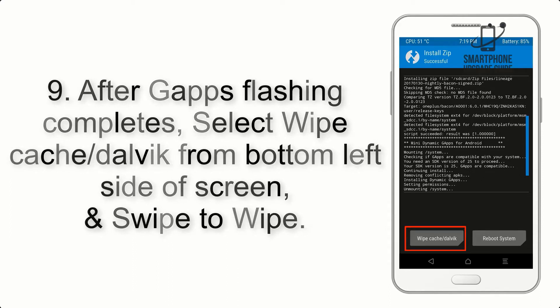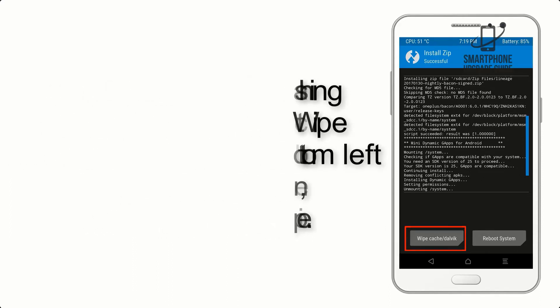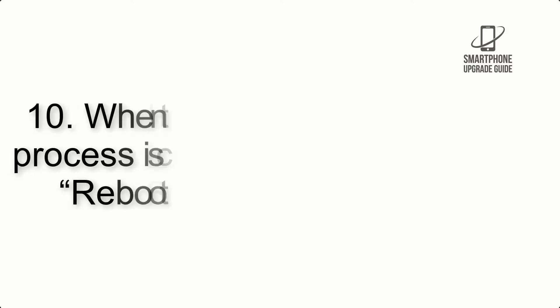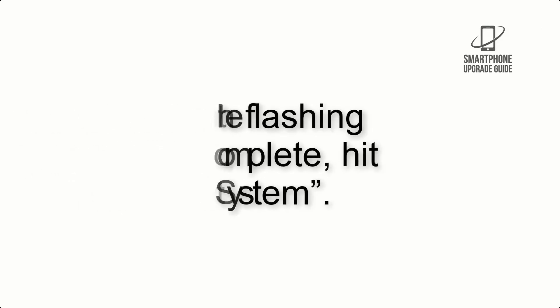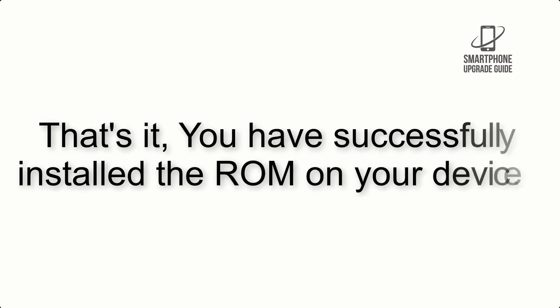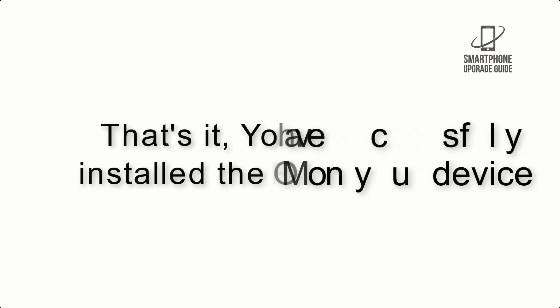Step 8: Flash the GApps zip package in the same manner. Step 9: After GApps flashing completes, select Wipe Cache and Dalvik from the bottom left side of the screen and swipe to wipe. Step 10: When the flashing process is complete, hit Reboot System. That's it — you have successfully installed the ROM on your device.